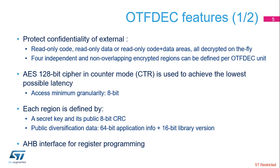Each region is defined by a 128-bit secret key and its public 8-bit CRC. The initialization vector of each region is built by the OTF-DEC unit using a 64-bit application information field and a 16-bit library version. The user can define this information as public diversification data.